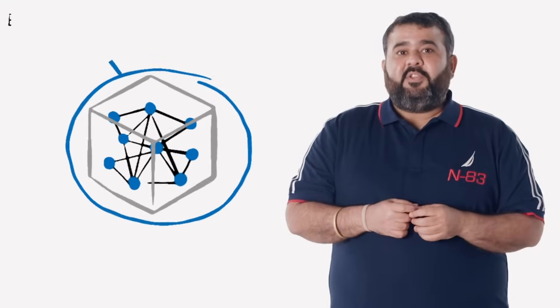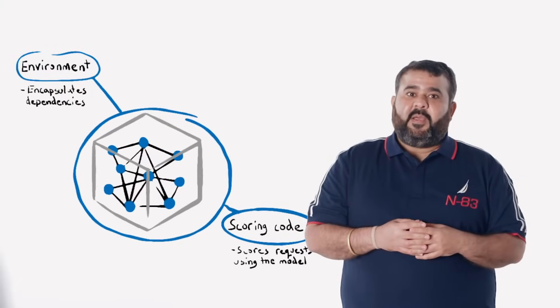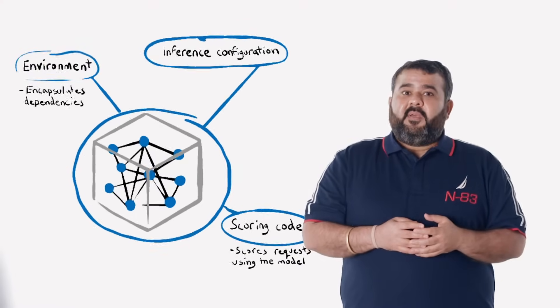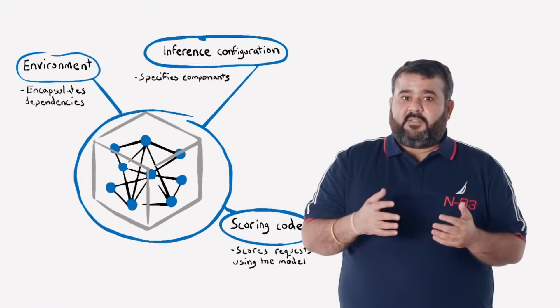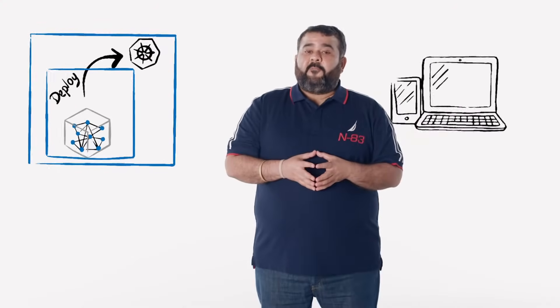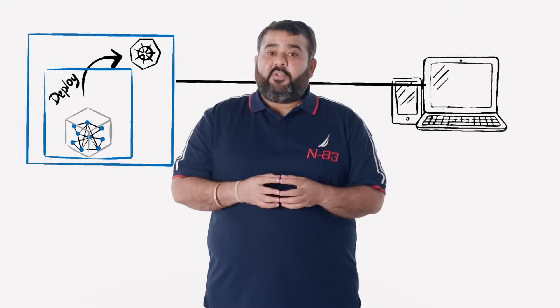Now let's talk about deployment topologies. For models to be deployed as an endpoint, you need the following components: first, an environment that encapsulates the dependencies required to run your model for inference; second, scoring code — a script that accepts requests, scores them using the model, and returns results; third, inference configurations that specify the environment, the entry script, and other components needed to run the model as a service. These are all placed into a base container image, which becomes the execution environment for the model. The container image has a load-balanced HTTP endpoint that receives scoring requests sent to the web service.